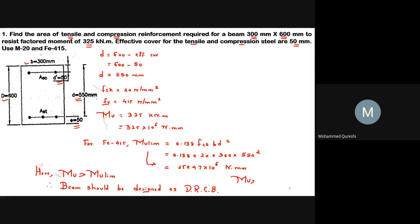The additional moment to be carried by the compression reinforcement is Mu2 = Mu − Mu,lim = 325 × 10⁶ − 250.47 × 10⁶ = 74.53 × 10⁶ N·mm.